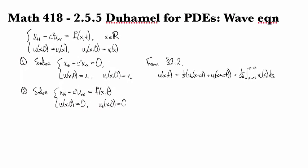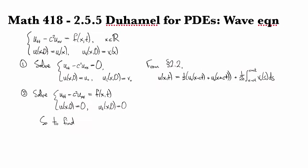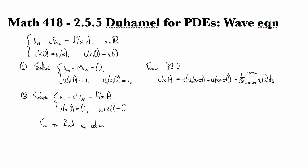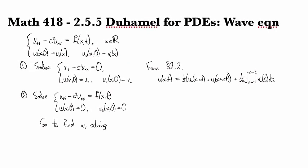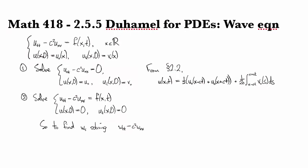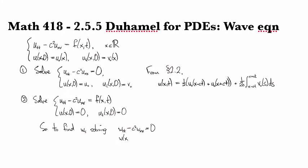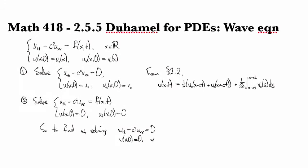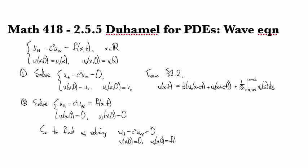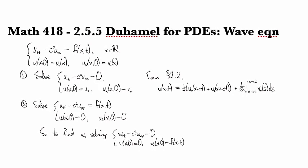So in order to do this one, let's think about Duhamel's. So to find the function W sub tau that solves Wtt minus C squared Wxx equals 0, W(x,tau) equals 0, and Wt(x,tau) equals f of (x,tau).